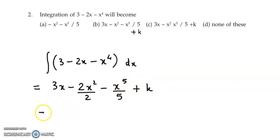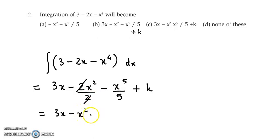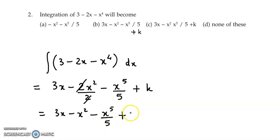So we obtain 3x minus x square minus x raised to 5 upon 5 plus k. So this is the correct answer — option b.